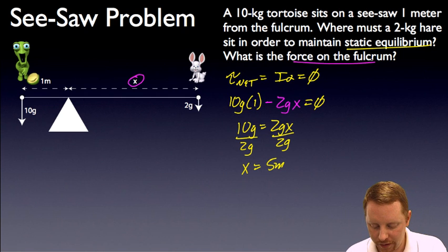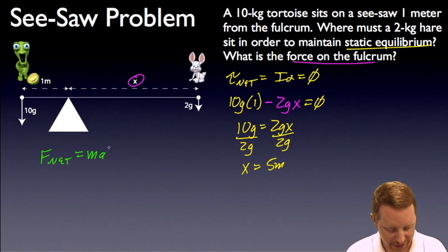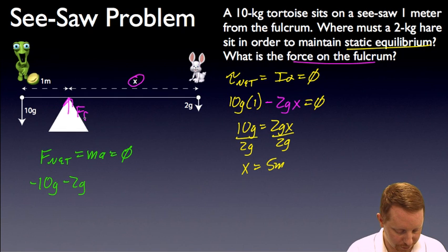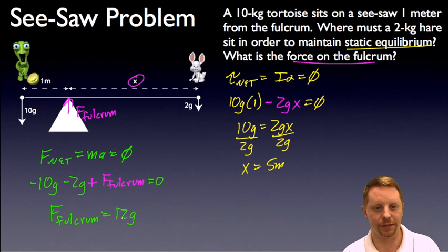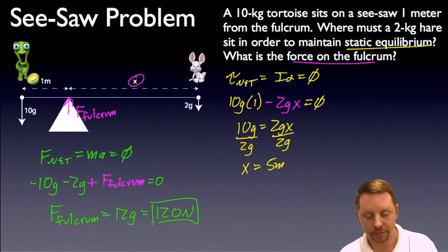It also asks about the force on the fulcrum. Well, that's just a standard translational Newton's second law application. Net force equals ma, and again, no acceleration, so that must be equal to zero. Our forces, we have 10g down, so minus 10g from our tortoise. We have minus 2g from our hare, and let's also not forget the force of our fulcrum over here. So that has to add in, plus the force of our fulcrum, all has to equal zero. Or negative 12g plus the force of the fulcrum equals zero. Pretty easy to see that the force of the fulcrum is going to be 12g, or if we estimate g, the acceleration due to gravity on the surface of the earth, is about 10 meters per second squared, that's going to be around 120 newtons. Okay, hopefully pretty straightforward applications of those laws.